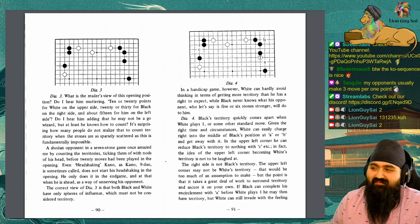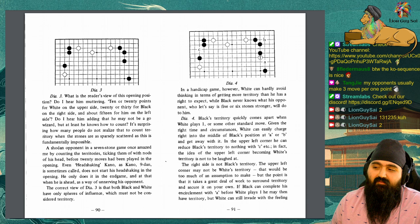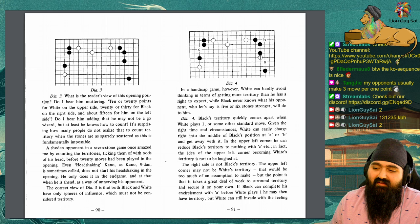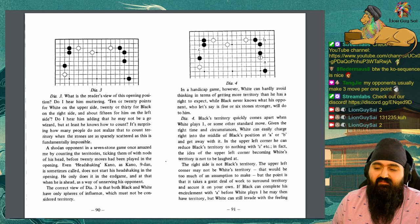Diagram 3. What is the reader's view of this opening position? Do I hear him muttering 10 or 20 points for white on the upper side, 20 or 30 for black on the right side, and about 15 for him on the left side? Do I hear him adding that he may not be a go wizard, but at least he knows how to count? It's surprising how many people do not realize that to count territory when the stones are as sparsely scattered as this is fundamentally impossible.